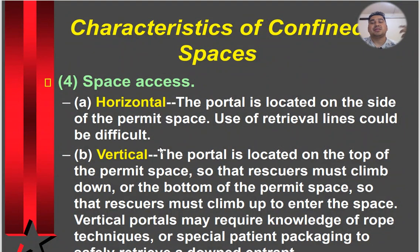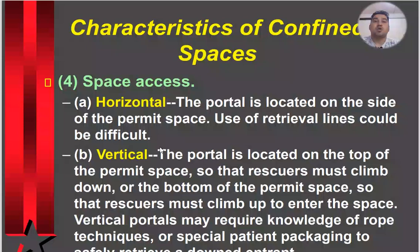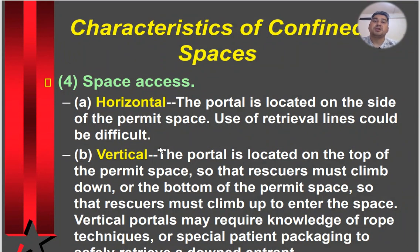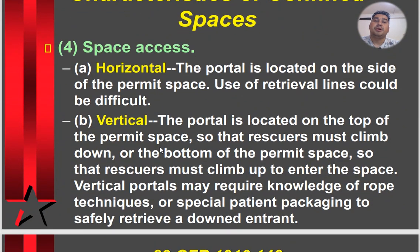Space access — horizontal: the portal is located on the side of the permit space; use of retrieval lines could be difficult. Vertical: the portal is located on the top or bottom of the permit space so that the rescuer must climb down or up to enter the space. Vertical portals may require knowledge of rope techniques or special patient packaging for safe retrieval.